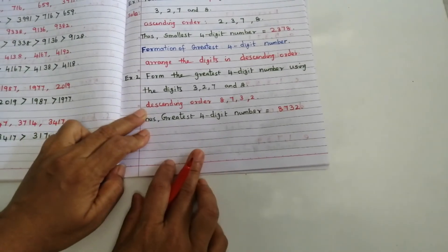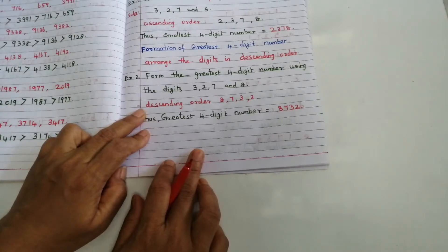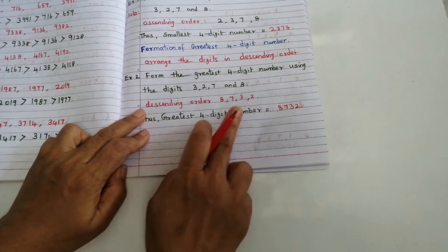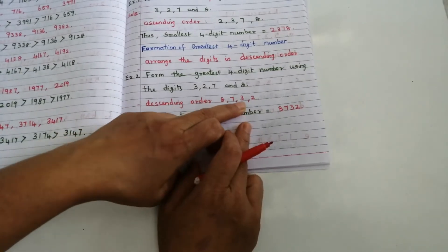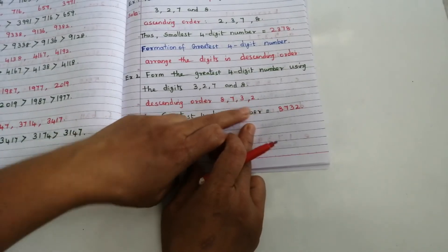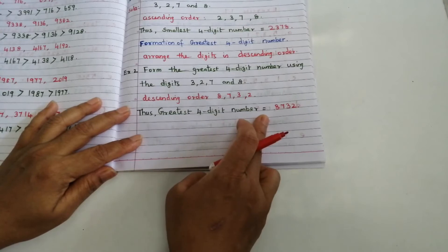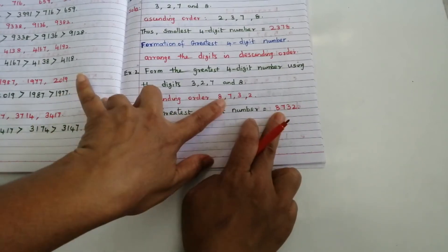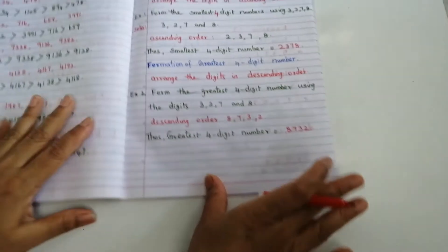To get the greatest four-digit number, we arrange in descending order — big to small: 8, 7, 3, 2. So the greatest four-digit number is 8732.